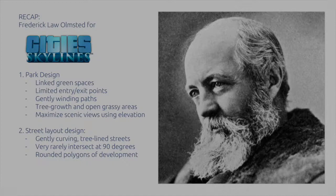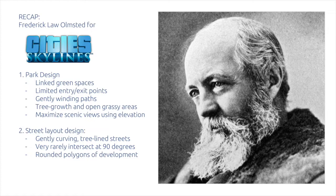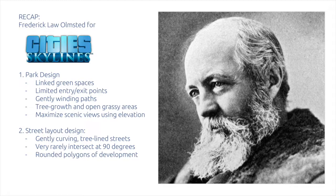Just a quick recap on what you can take from Frederick Law Olmstead for City Skylines. First, park design: link your green spaces and connect them to make one larger parkland area giving city dwellers a connection with nature. Limit the entry and exit points on your parks — too many entrances makes it feel less special. Use gently winding paths rather than direct 90-degree connections. Utilize both tree groves and open grassy areas. And maximize scenic views using elevations — if your park is on a hillside, make sure paths run along those elevations so visitors at higher points have something special to look at.